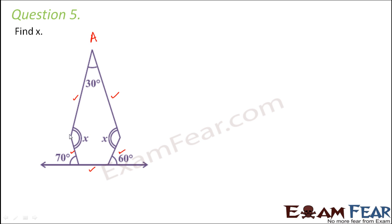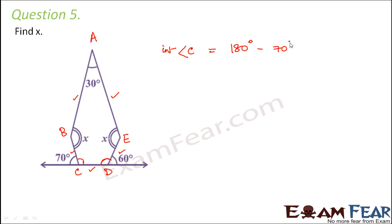So first let us name this figure. Let's call this A, this point as B, this is C, this is D, and this is E. So let us calculate the value of the interior angle C. The interior angle C plus the exterior angle C is equal to 180 degrees — that is a straight line. So interior angle C equals 180 minus 70, which is equal to 110 degrees.